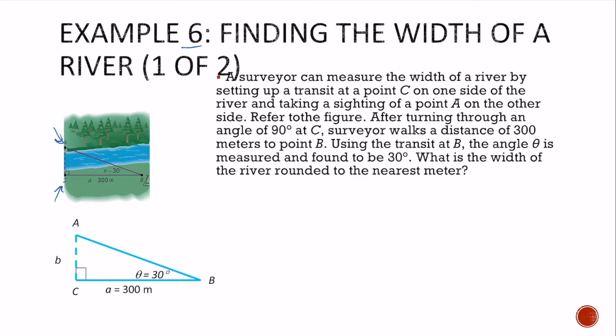An angle of 90 degrees at C, okay, he walks 300 meters to point B. So using the transit at B, the angle theta is found to be 30 degrees. You can see it more clearly down here. What is the width of the river rounded to its nearest meter? So I'm going to use tangent because I don't know my hypotenuse, it's unknown. So I'm going to take tan of 30 degrees.